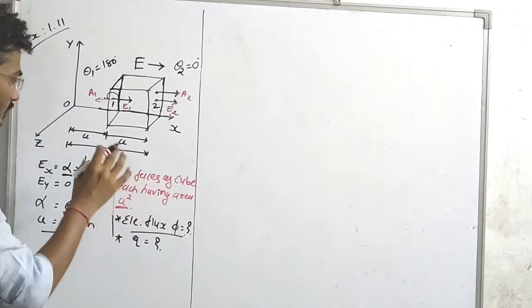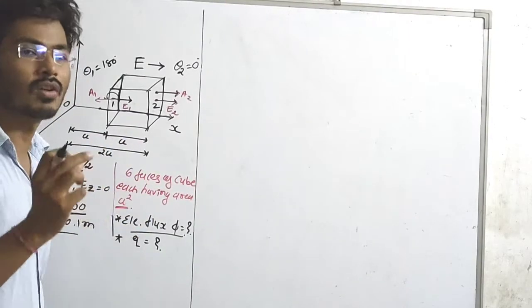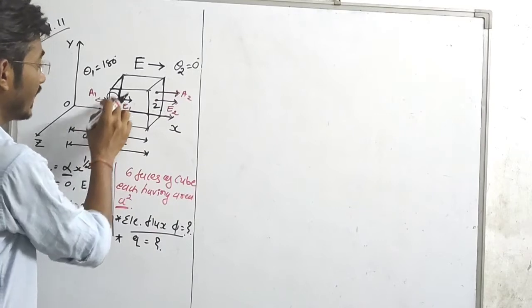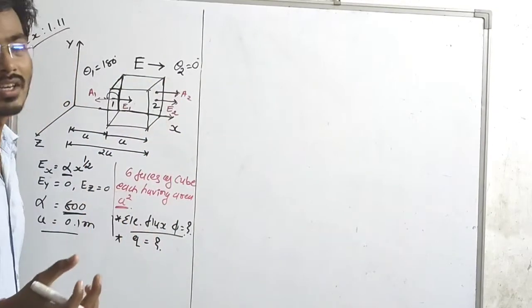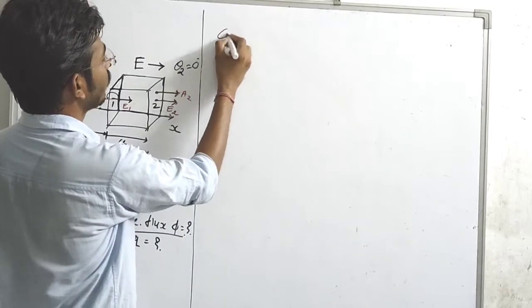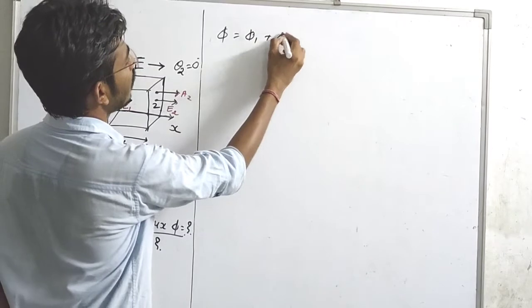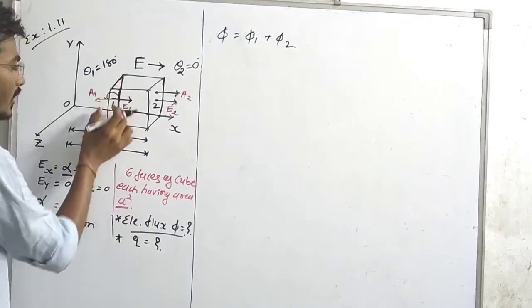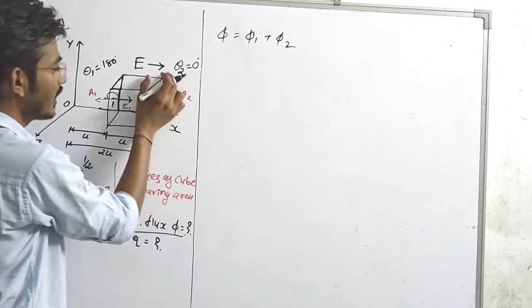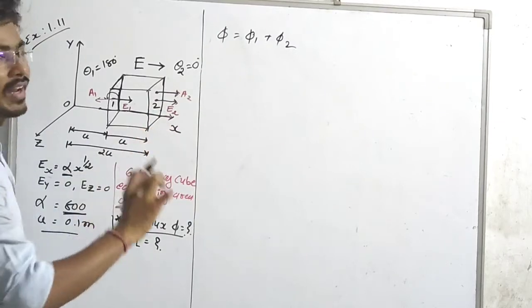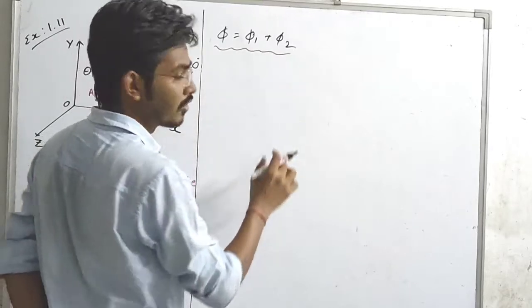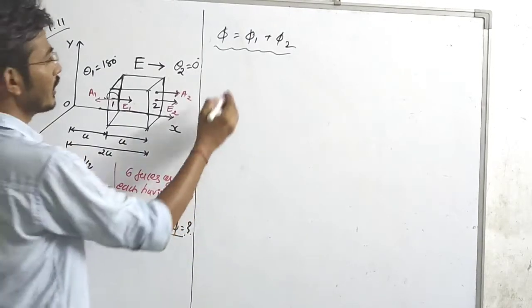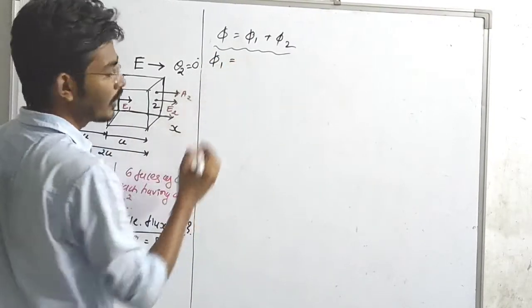According to the figure configuration, we have to find out the flux through both faces — face 1 and face 2 of the cube. The total flux phi is equal to phi 1 plus phi 2. So for that we can find out the value of the flux for this cube. Therefore, flux — we already have the equation: